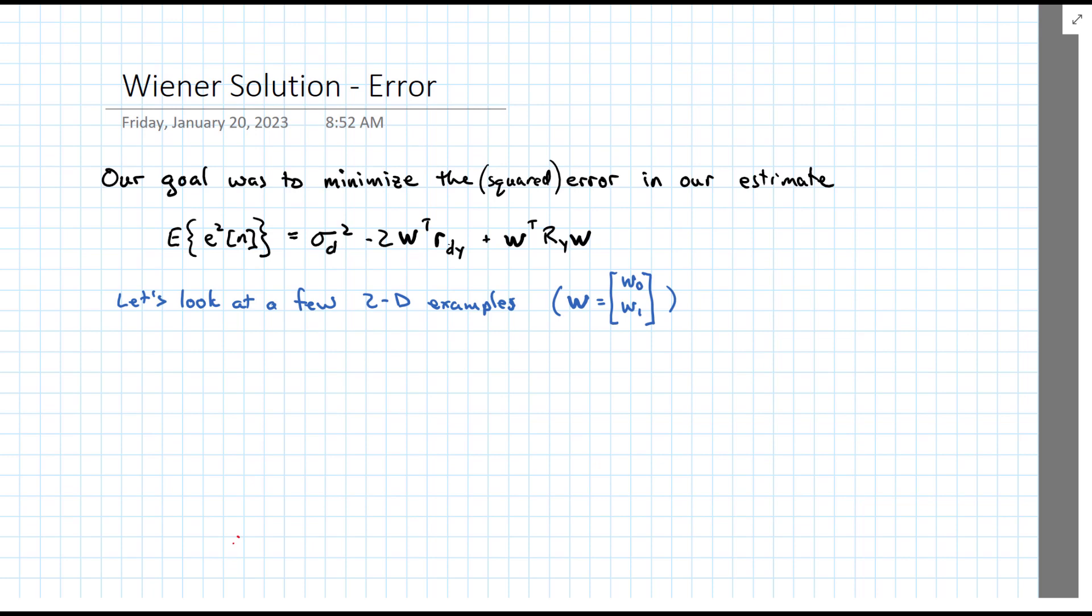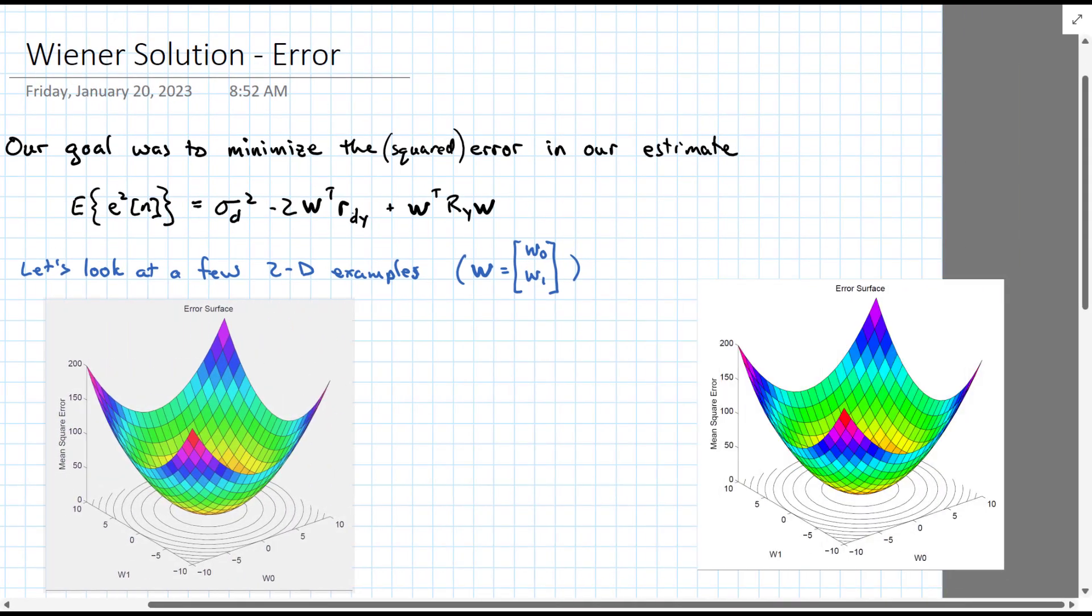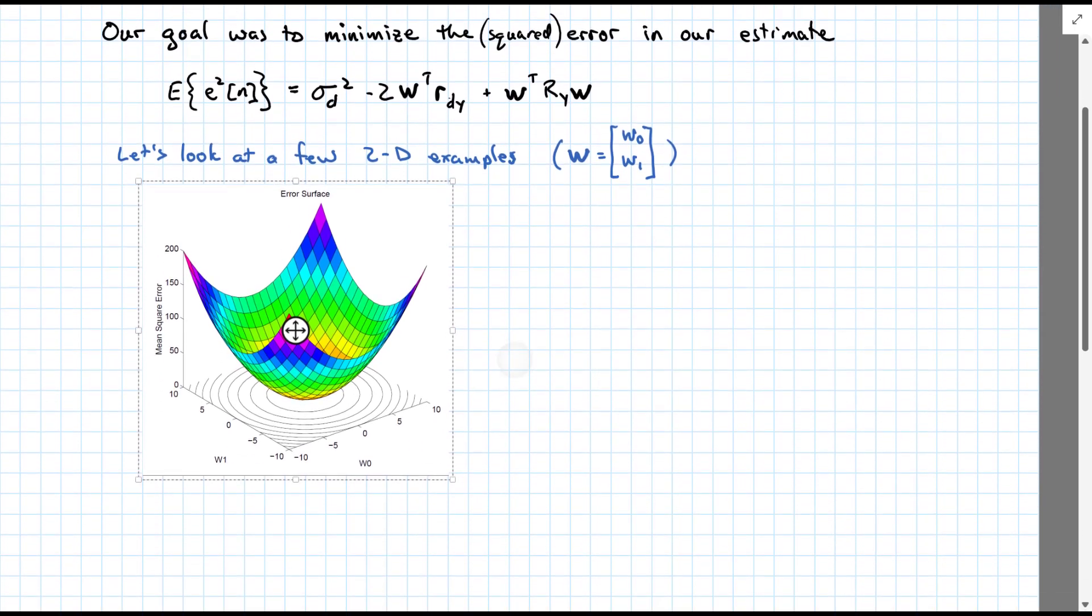So we'll start by looking at a few 2D examples, where our weight vector is W0 and W1. And every error surface will look different depending on the parameters that we have, but here's a typical one.